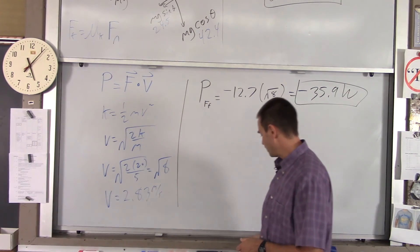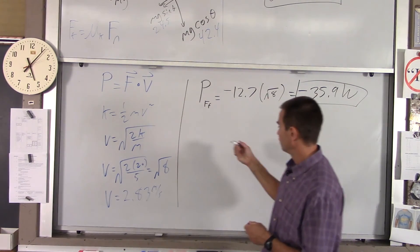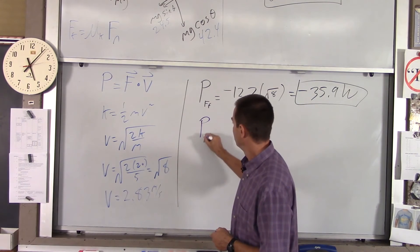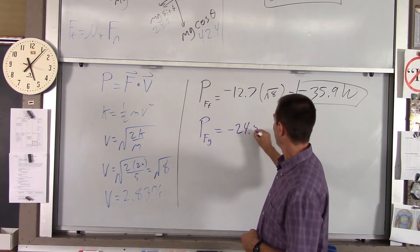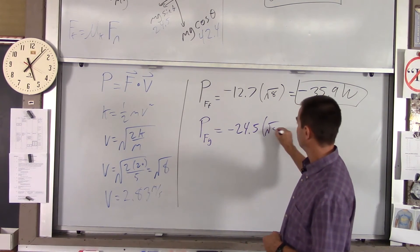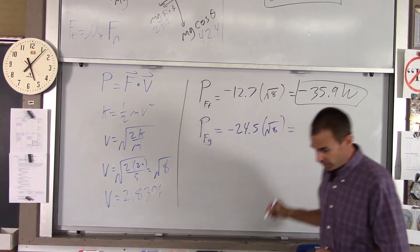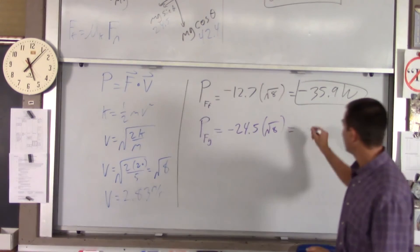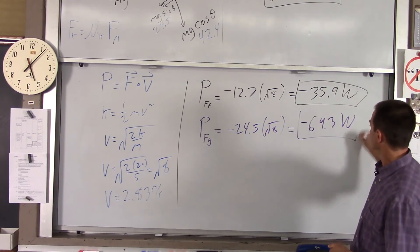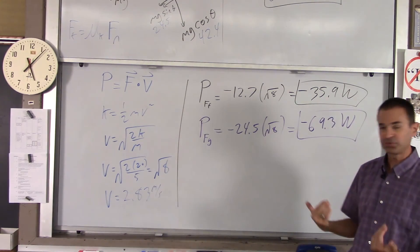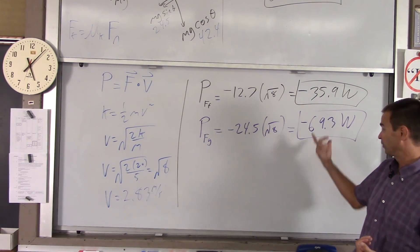In addition, gravity is also taking energy away, and it's very similar. Power by gravity is negative 24.5 times the distance, and for that one, you get a bigger number, negative 69.3 watts. So, same thing, it's also negative because gravity is also taking that energy away at this rate.